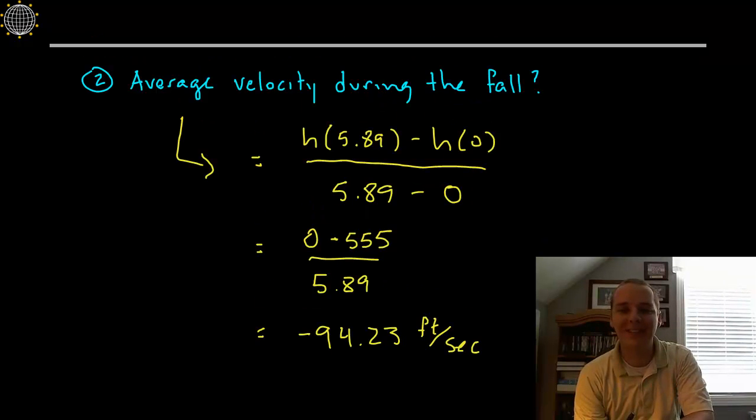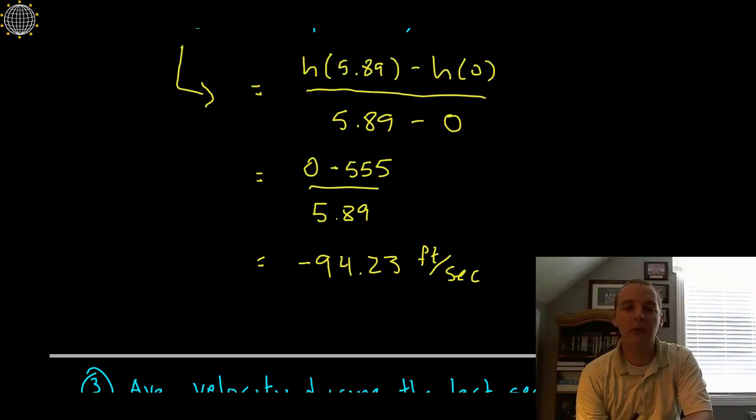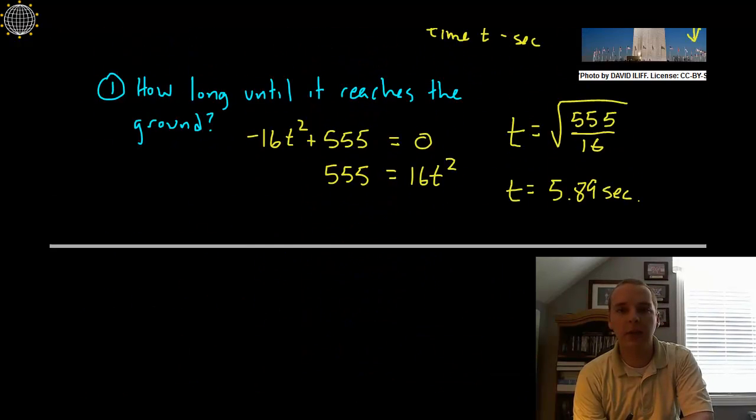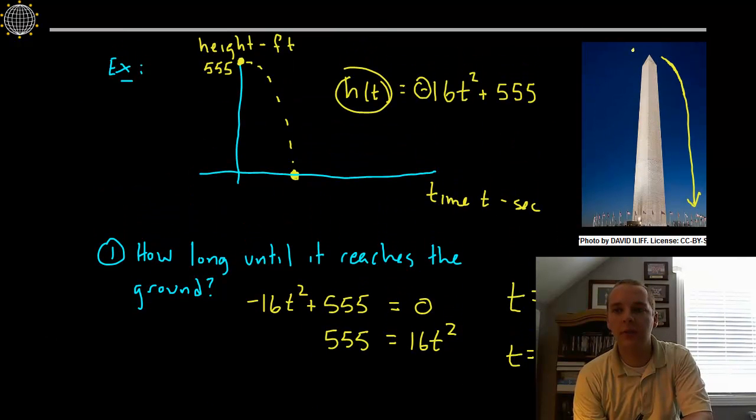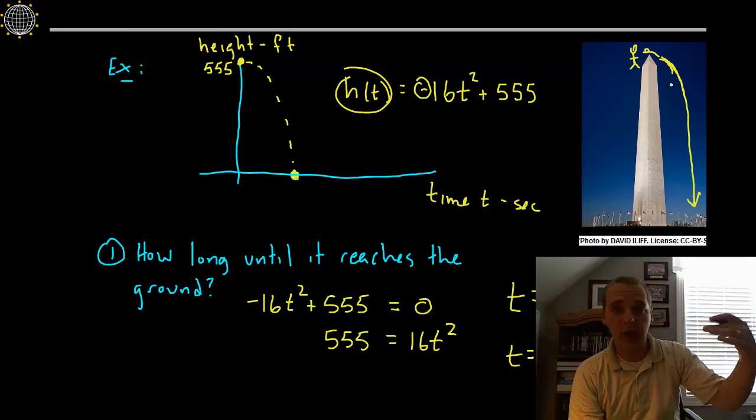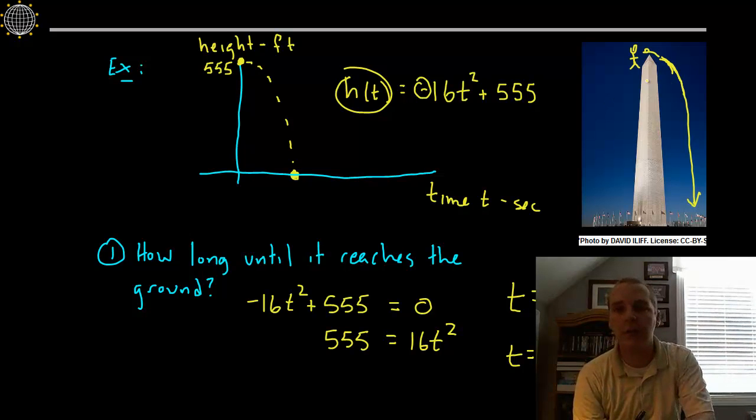So every second is decreasing on average about 94 feet every second. Now is it a consistent 94 feet drop the first second and the second and the third and the fourth and the fifth second? I don't think so. We kind of know this intuitively. As soon as you drop the coin, it's not going to be going very fast because gravity accelerates the coin and makes it go faster the longer that it's falling.